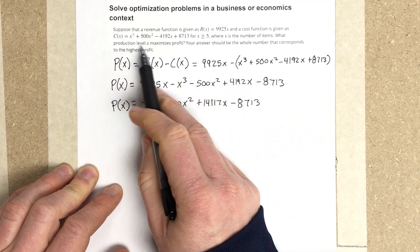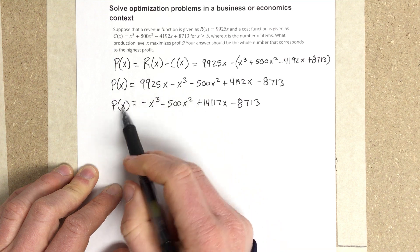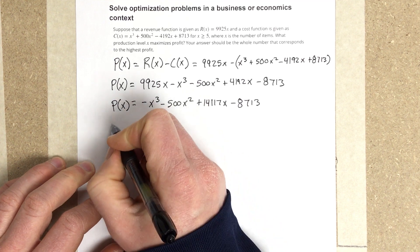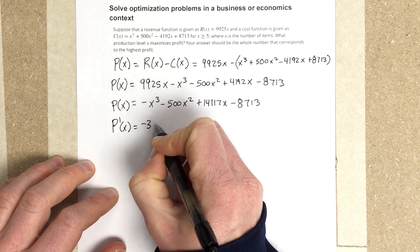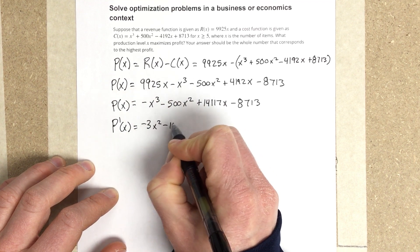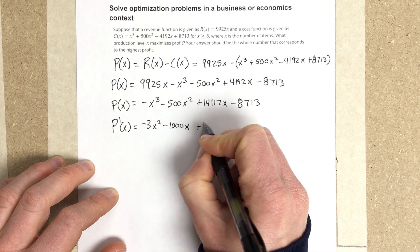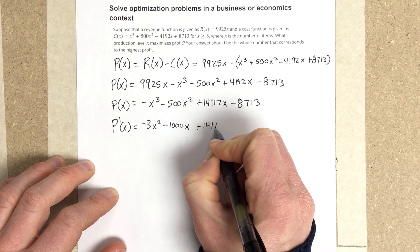If we want to maximize profit, we're going to take the derivative of the profit equation and set it equal to zero. So P'(x) = -3x² - 1,000x + 14,117.